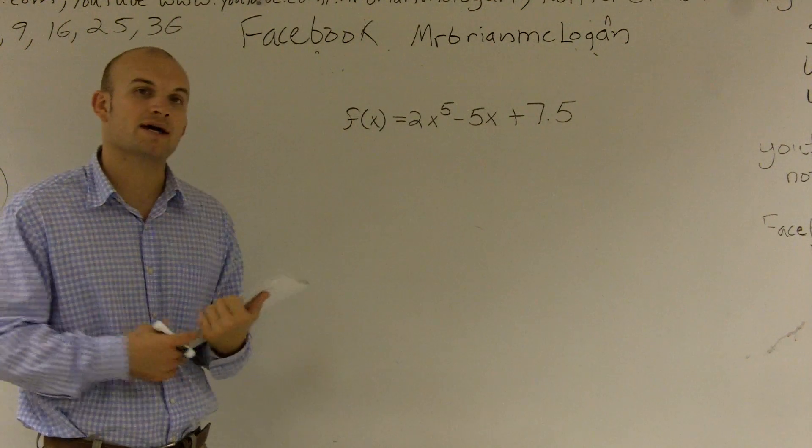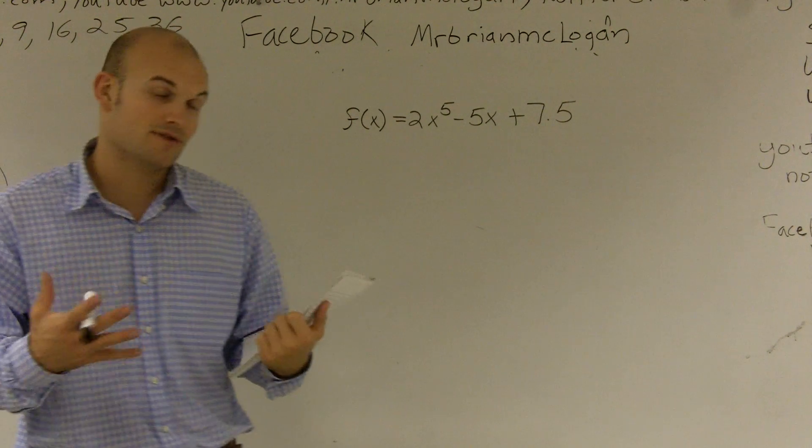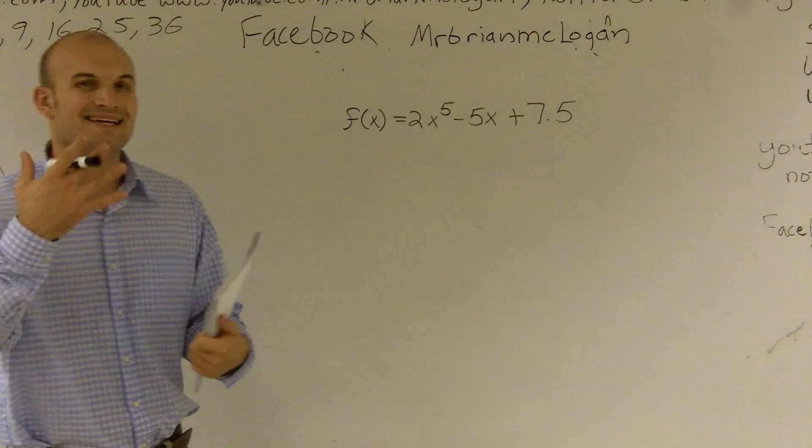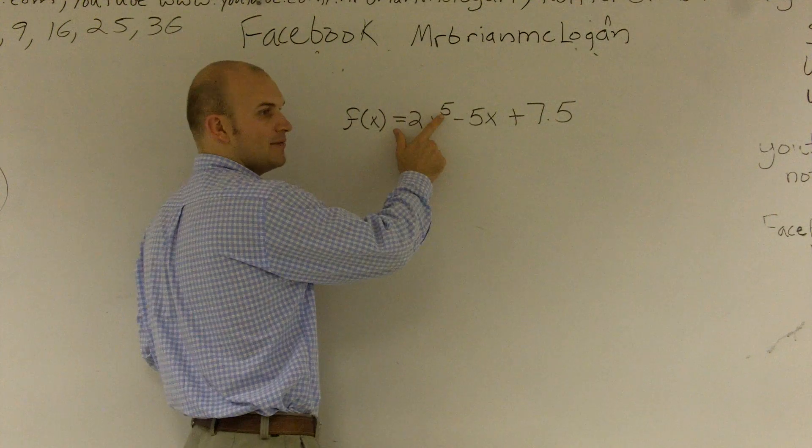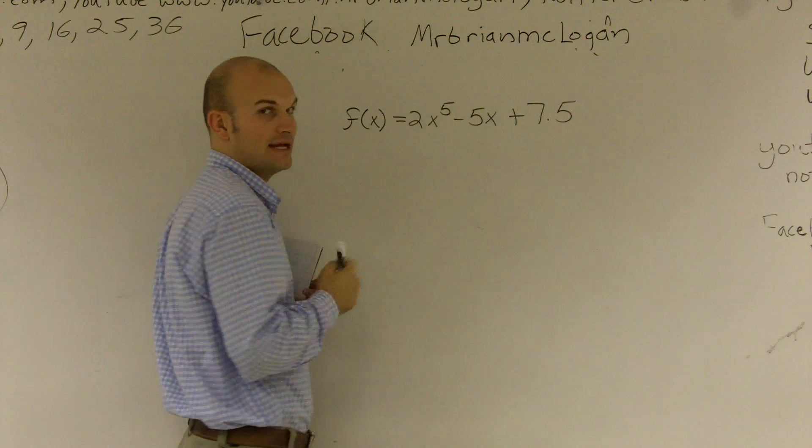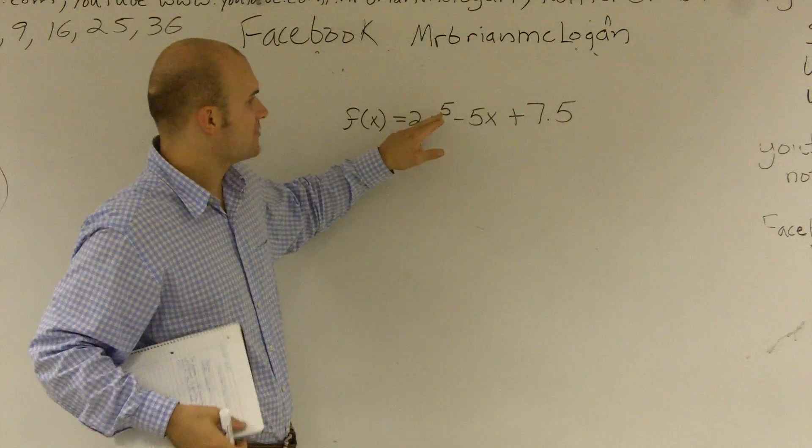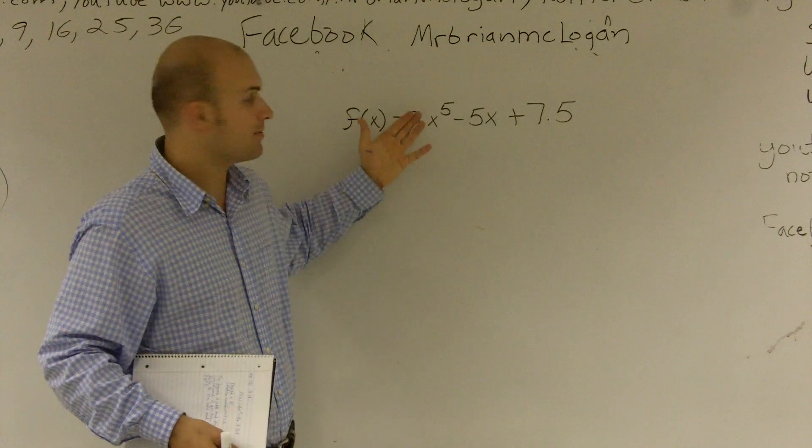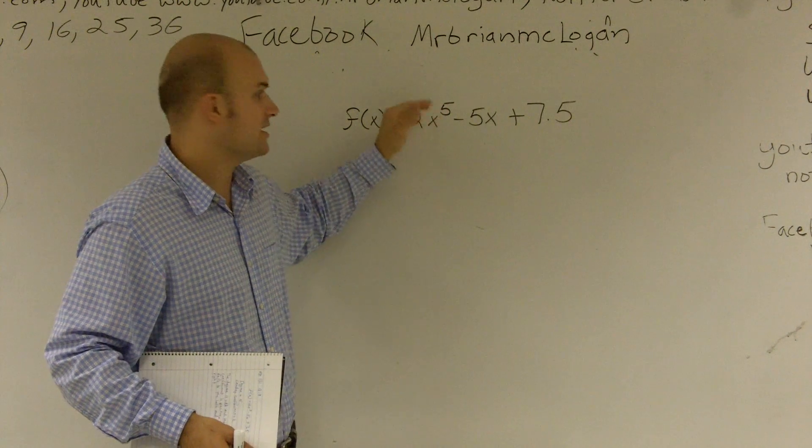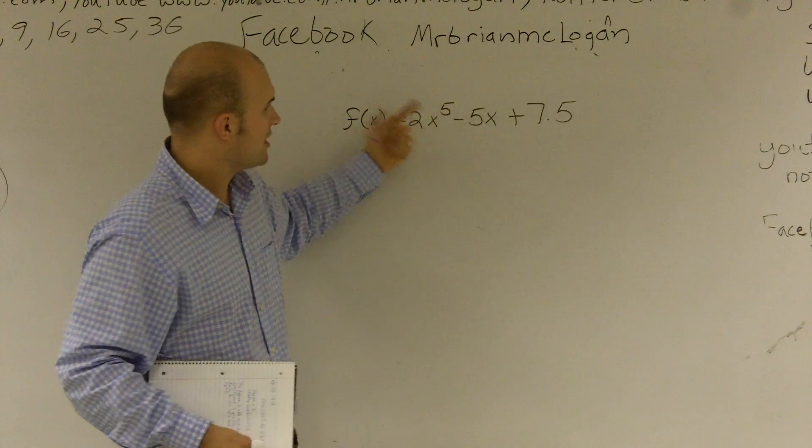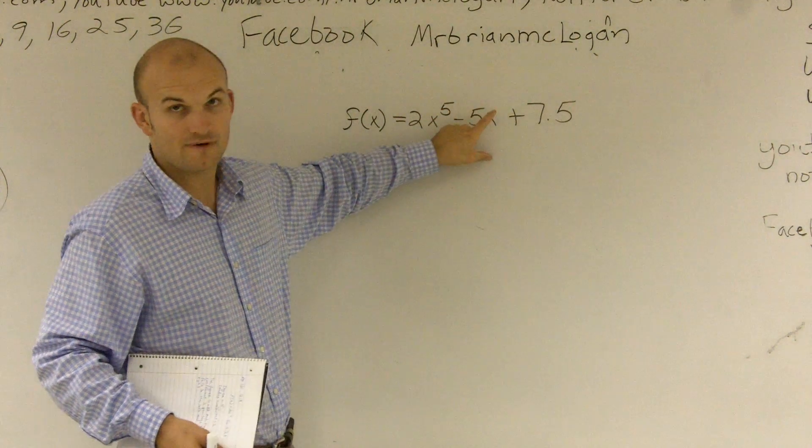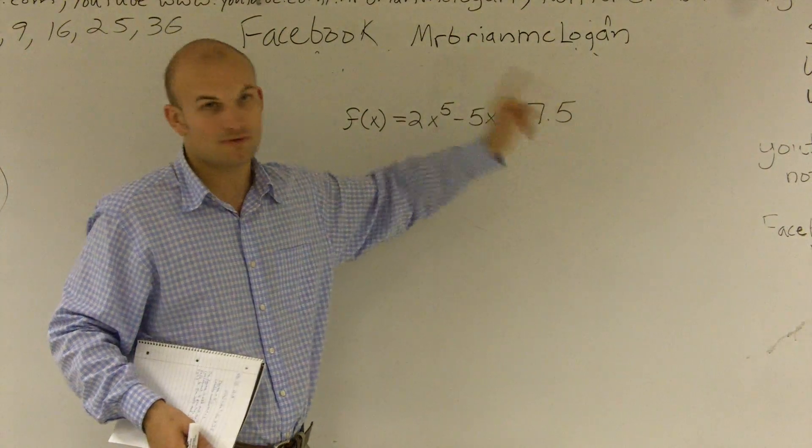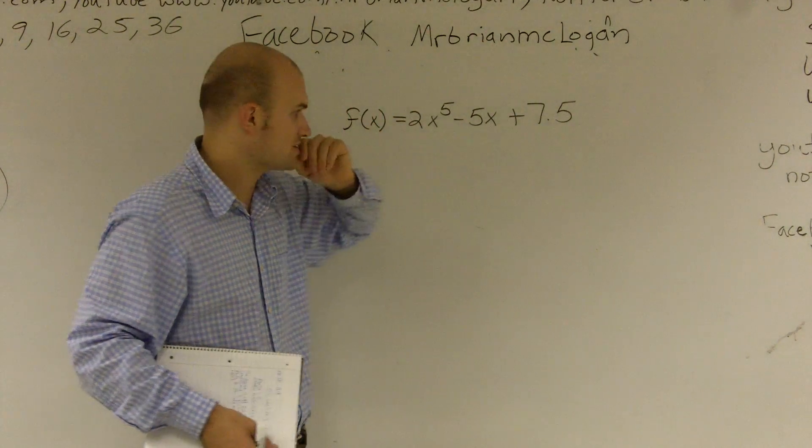First thing I need to do is make sure that my polynomial function is in descending order. And what I mean by that is I have my degree of my polynomial first. So the highest exponent is going to be first, which we call the degree of our polynomial function. Then from there, it is in descending order. So I look at this and I say, all right, x to the fifth, that's the highest power. Then the next highest power is x to the first. And then my constants are always at the end.